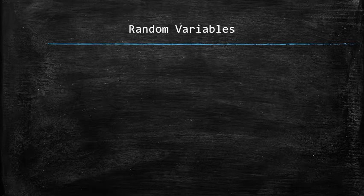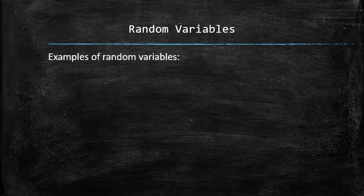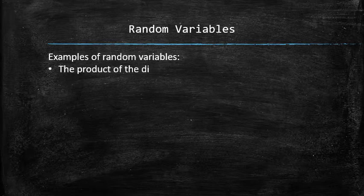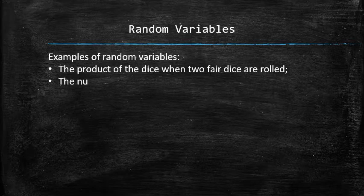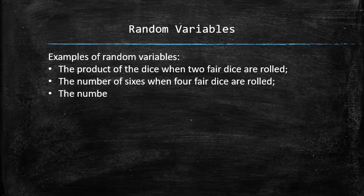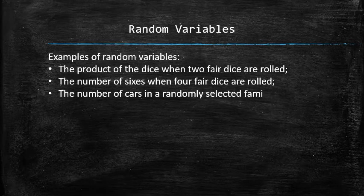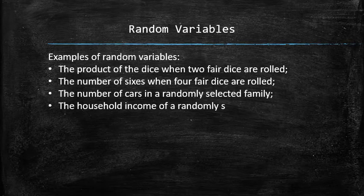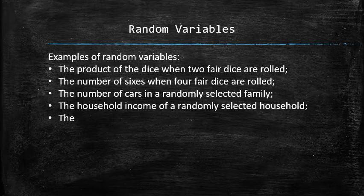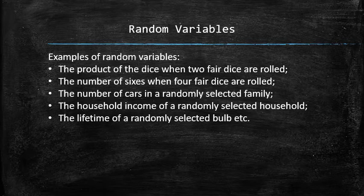We are still going to perform the same experiments as before, but from now on we will keep an eye on the outcomes and events whose verbal descriptions can be quantified, as in the following examples: the product of the dice when two fair dice are rolled; the number of sixes when four fair dice are rolled; the number of cars in a randomly selected family; the household income of a randomly selected household; the lifetime of a randomly selected bulb; and many others.